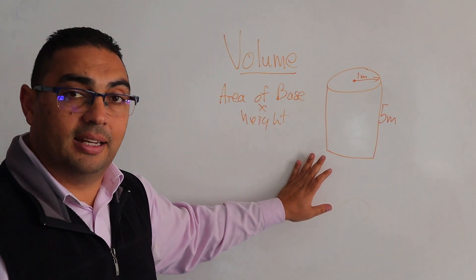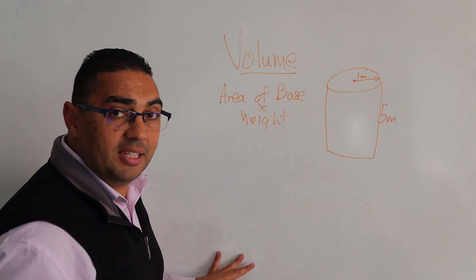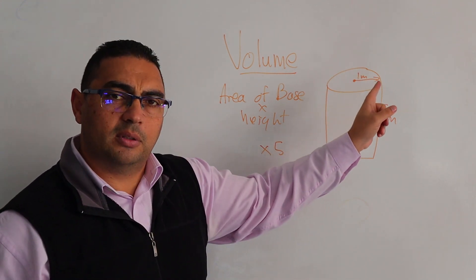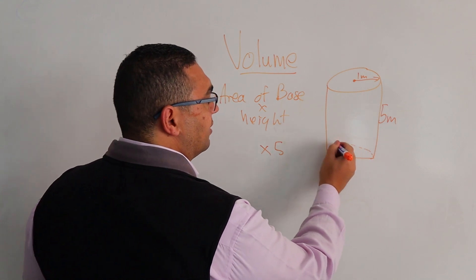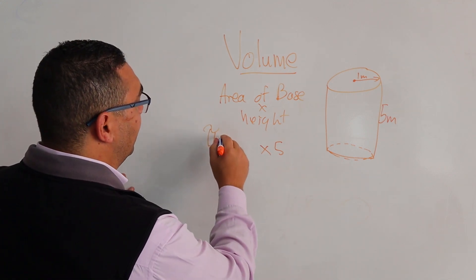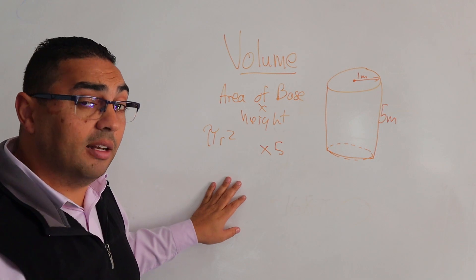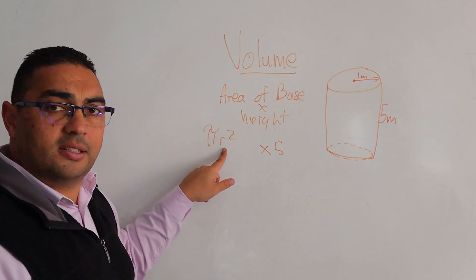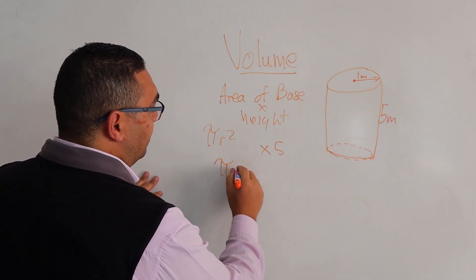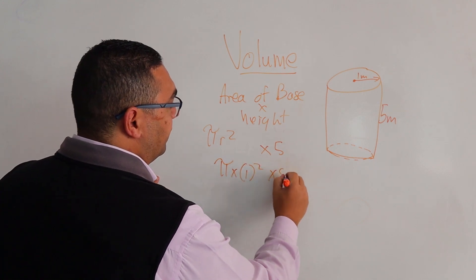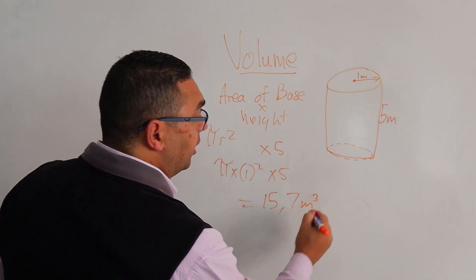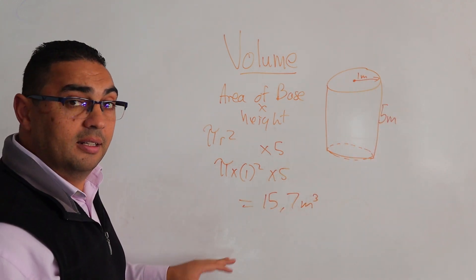Next, we're dealing with a cylinder. Again, area of the base times the height — we know the height is 5. For the base, we need the area of a circle, which is π r². That r stands for the radius, which is 1 meter. So we have π times 1 squared times 5, which gives us 15.7 cubic meters — that's the volume of the cylinder.